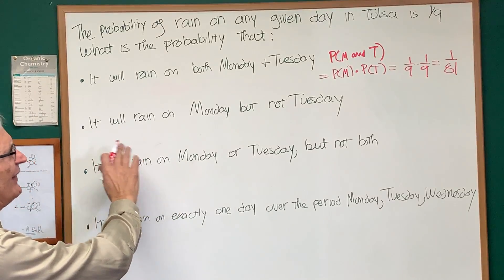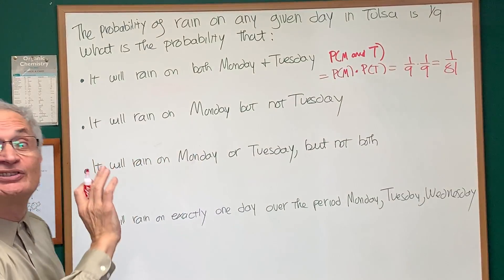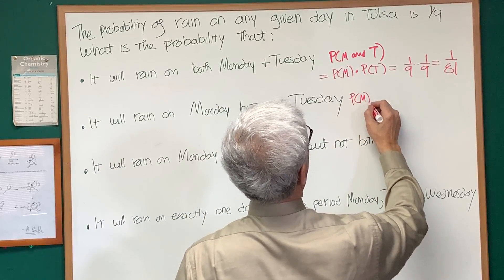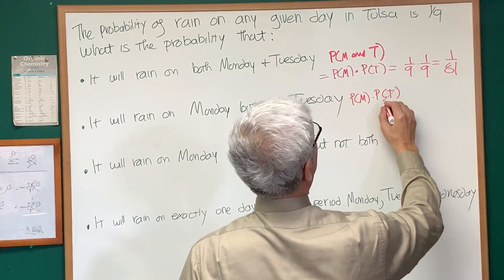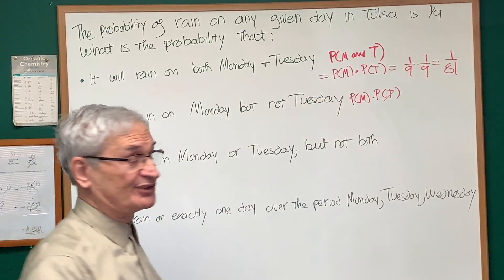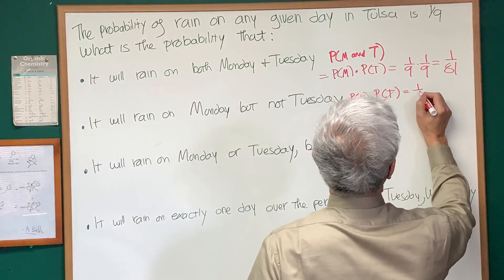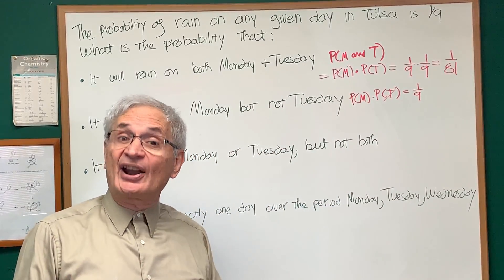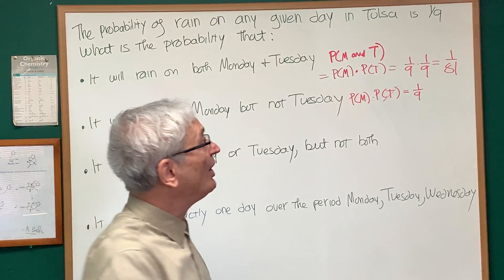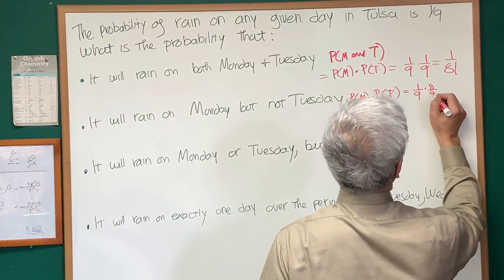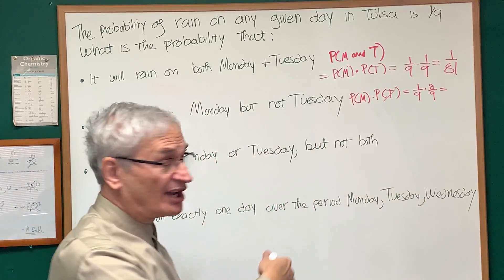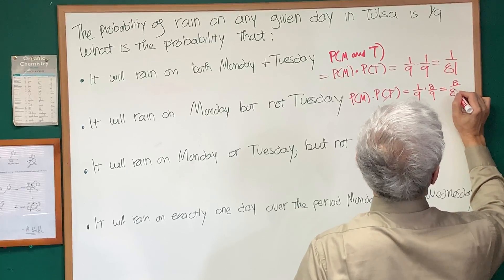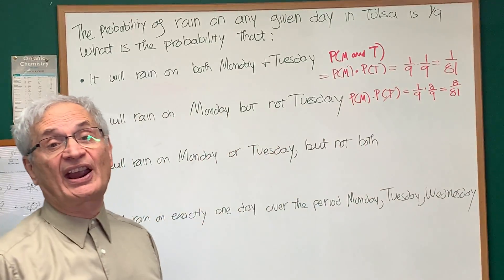What's the probability that it will rain on Monday but not Tuesday? We want the probability of Monday times the probability of not Tuesday. The probability of rain on Monday is one-ninth. The probability of not rain is the complement of that outcome, which is therefore eight-ninths. So the probability of rain on Monday but not on Tuesday is the product: one times eight is eight, nine times nine is 81 — eight over 81 is the probability.